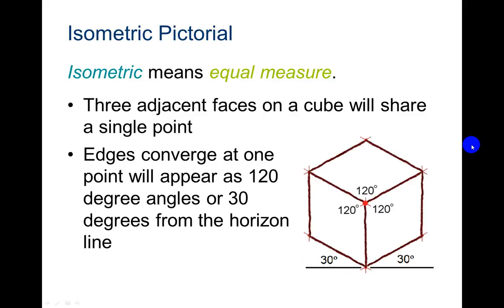We're going to start with isometric. Isometric means equal measure. Three adjacent faces on a cube will share a single point. Edges converge at one point will appear as 120 degree angles and then 30 degree angles from the horizon.